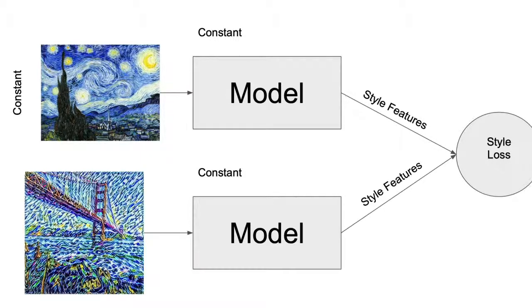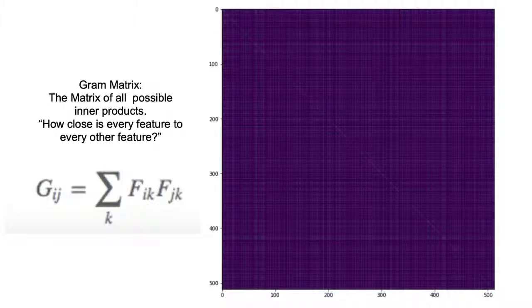Now, to understand style loss, we first have to understand what a gram matrix is. At a very high level, a gram matrix is just the matrix of all possible inner products. So, the distances between each of the features.